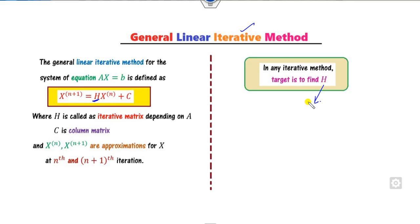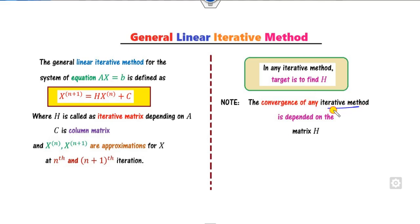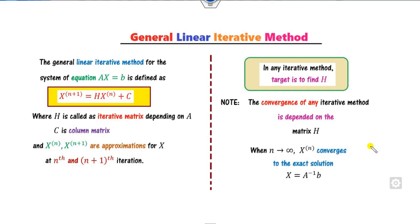We then check whether this iterative matrix is convergent or not. Remember, the convergence of any iterative method depends on the matrix H — that is why it is crucial to find H. As n approaches infinity, Xₙ approaches zero, and the solution converges to the exact solution A⁻¹B.